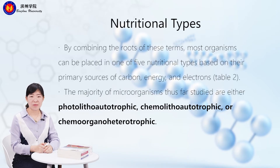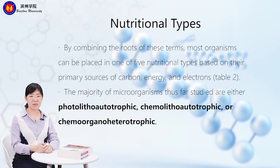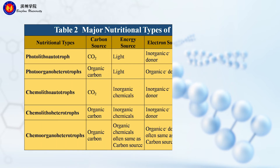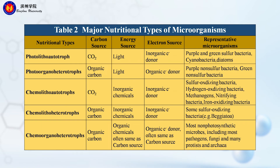By combining the use of these terms, most organisms can be placed in one of five nutritional types based on their primary sources of carbon, energy, and electrons. The majority of microorganisms thus far studied are either photolithol autotrophic or chemo-organoheterotrophic. Look at this table — these are the major nutritional types of microorganisms.